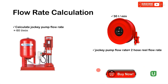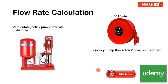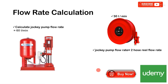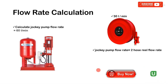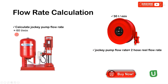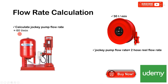The flow rate equals the jockey pump flow rate. The jockey pump flow rate equals the hose reel flow rate. One hose reel flow rate is 30 liters per minute, so two hose reels give a total flow rate of 60 liters per minute.